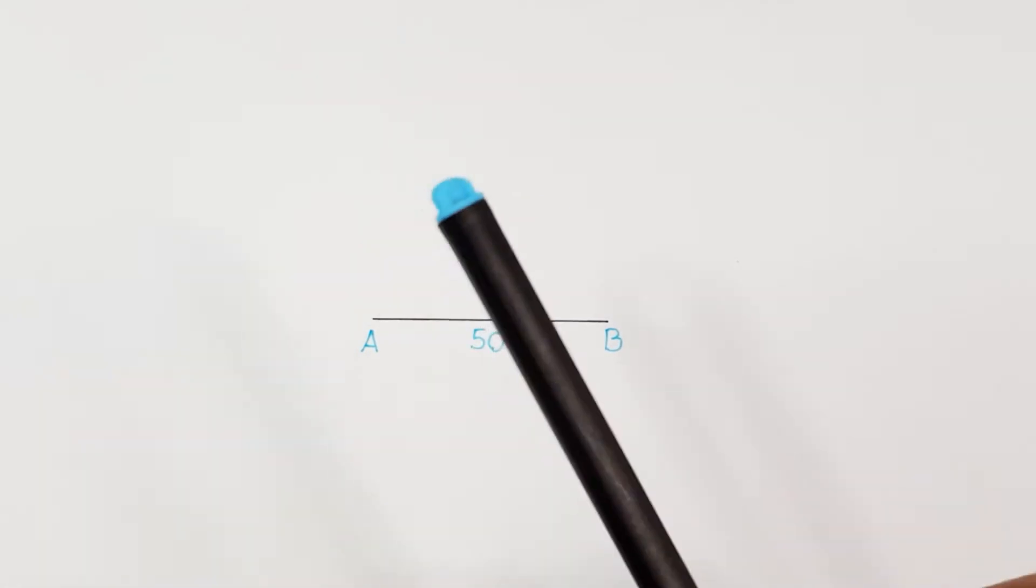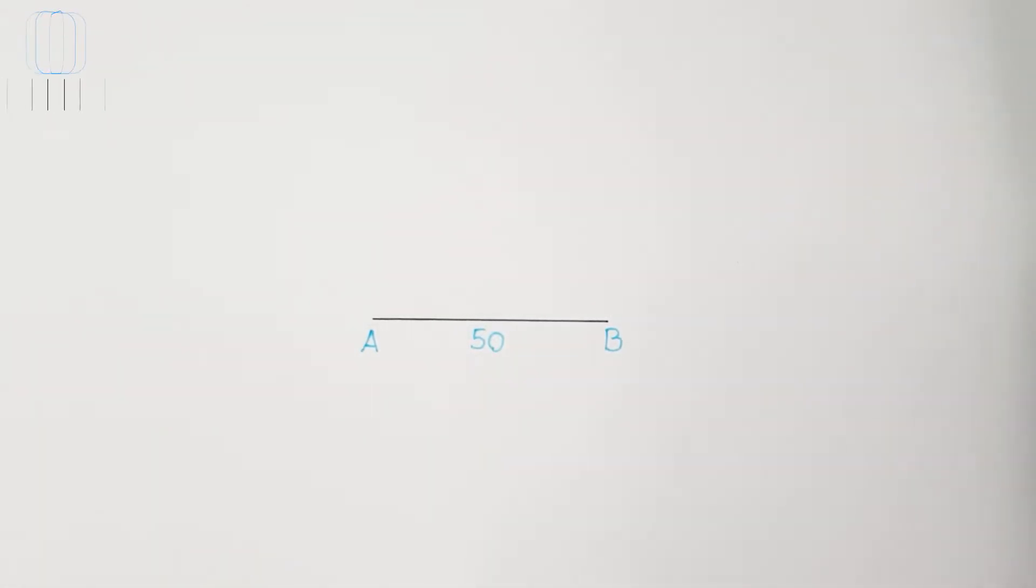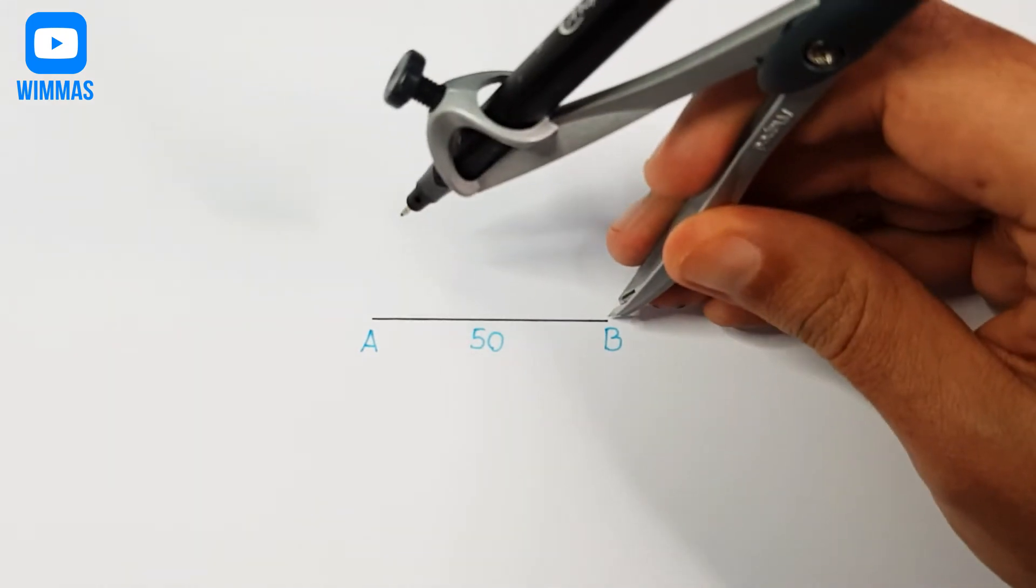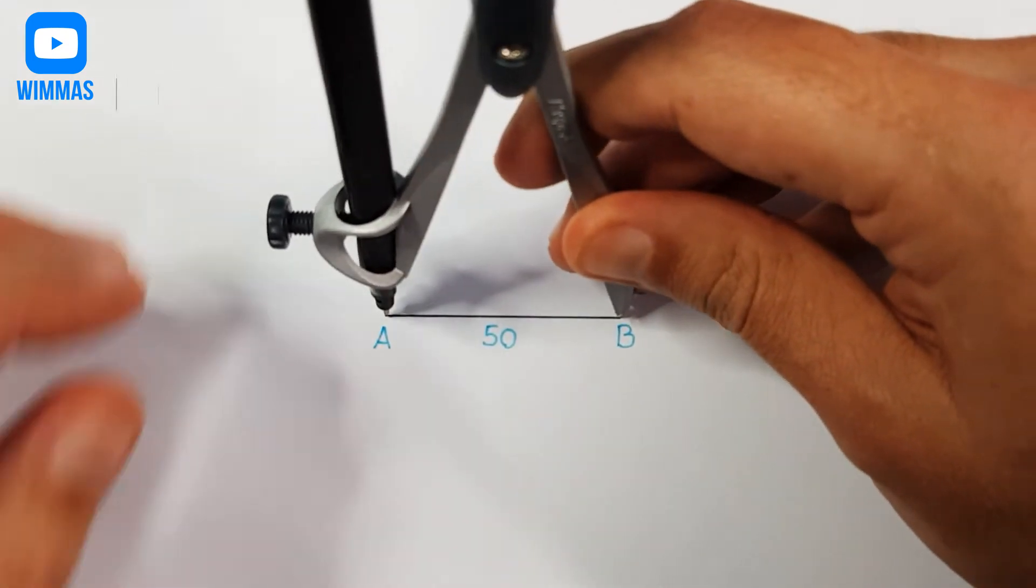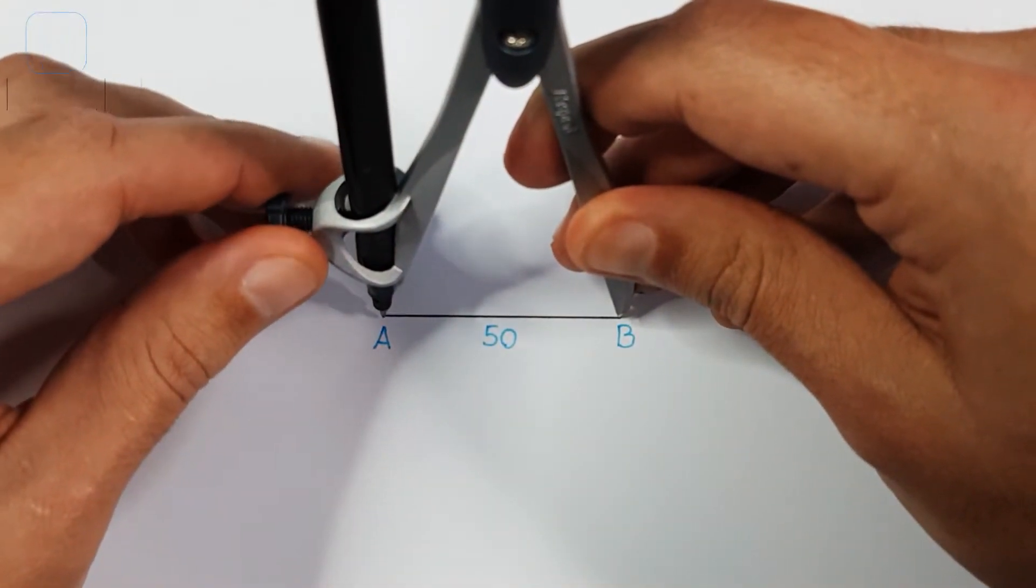Welcome back to another EGD video where I will show you today how to construct a pentagon. As always, I'm using a blue pen to show you my construction lines. For this example, I'll use the line AB that is 50mm. That is the side length of the pentagon.